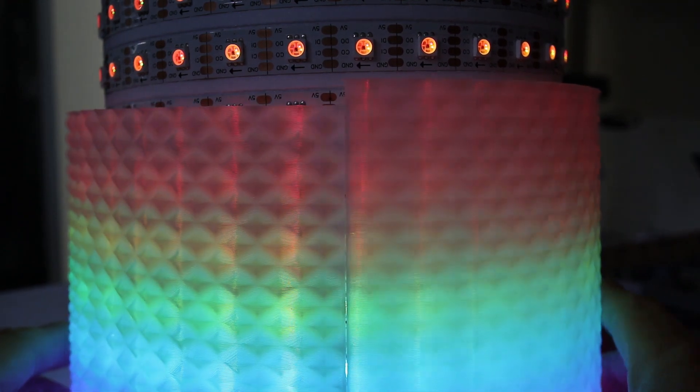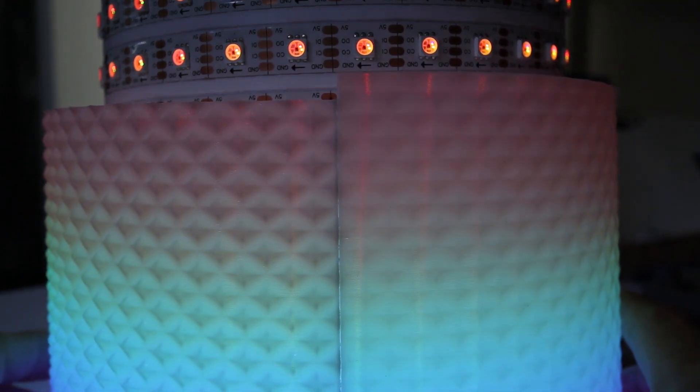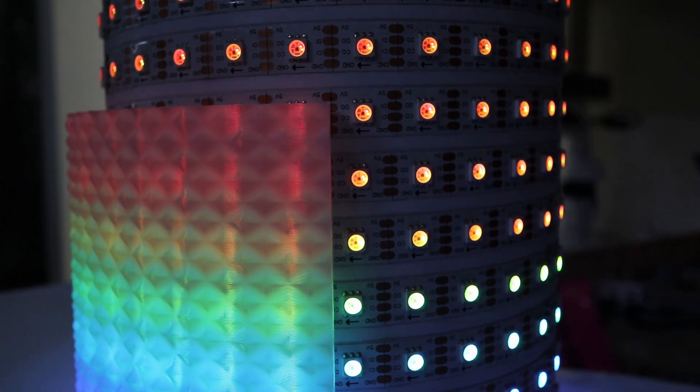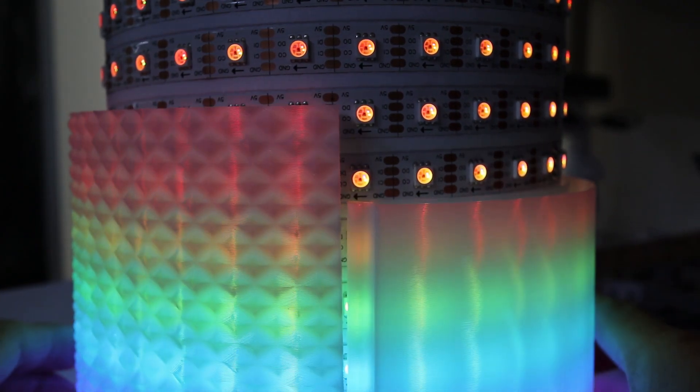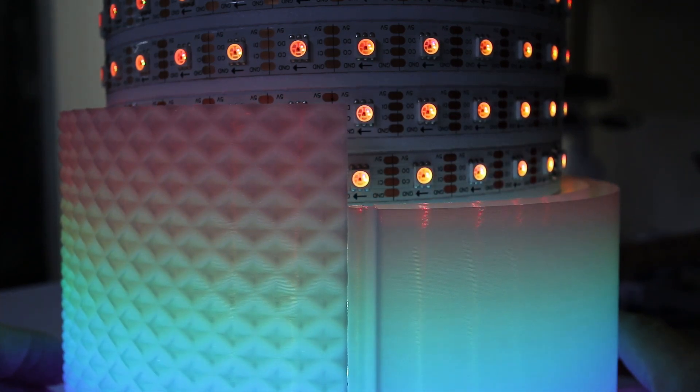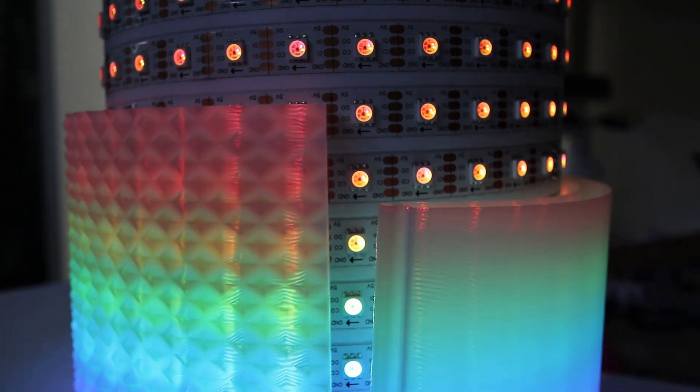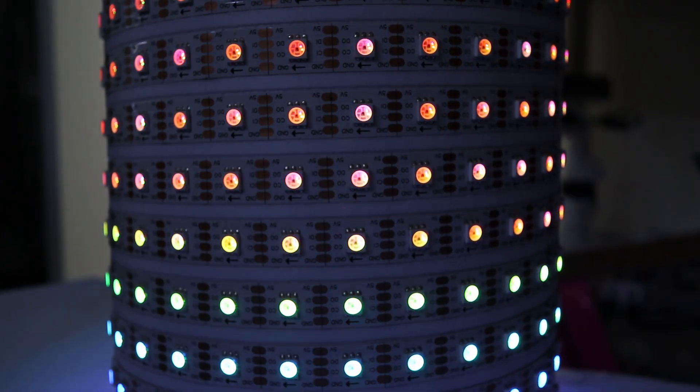The diffuser panels and their support rib form an external shell for Glowflow. Inside the cylinder, my placeholder USB power bank was replaced with a more powerful system so I could drive the LEDs up to full power. These components mark the successful completion of Glowflow.